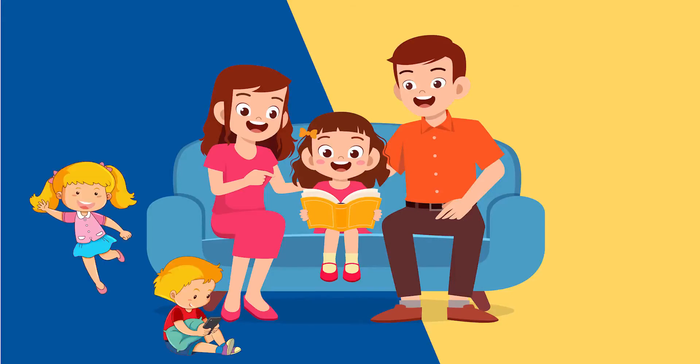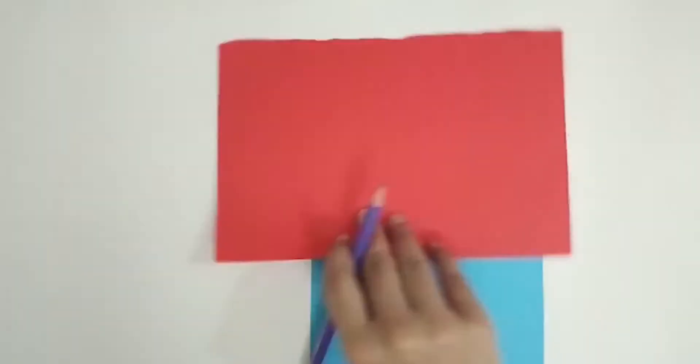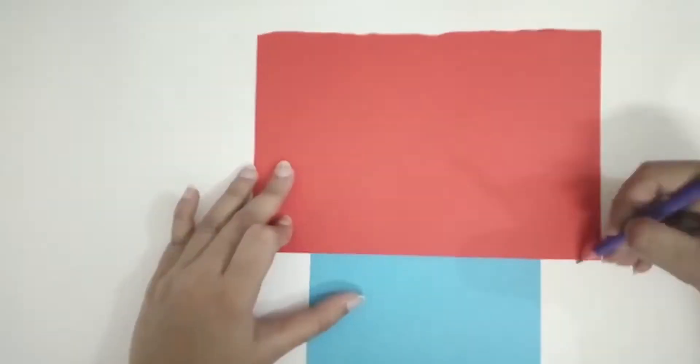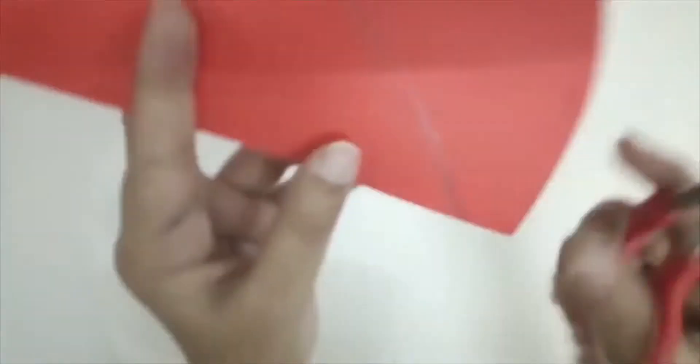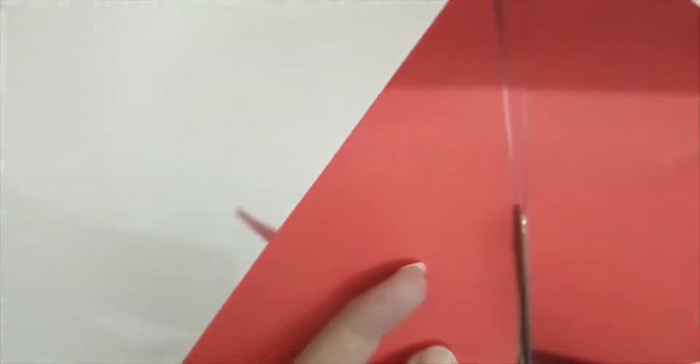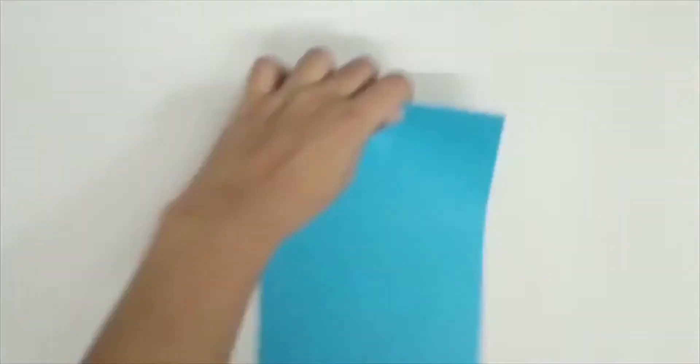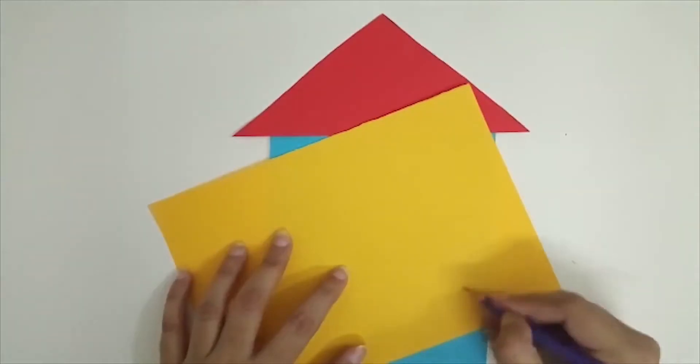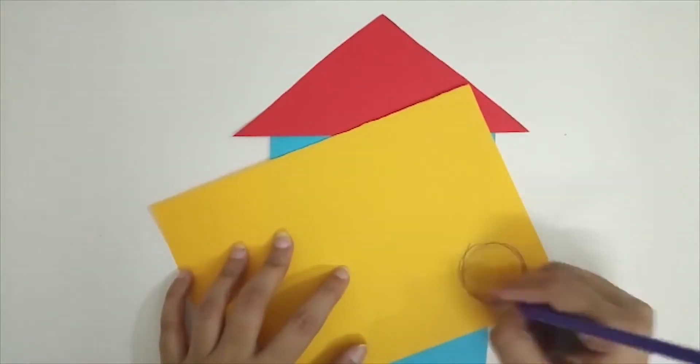Now take any colored paper and cut a rectangle shape. Take another colored paper and cut a triangle shape as shown. Put the rectangle paper vertically and paste the triangle on top of the rectangle. Now cut a small circle from a third paper and paste it in the center of the triangle.